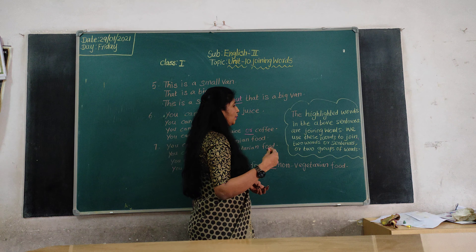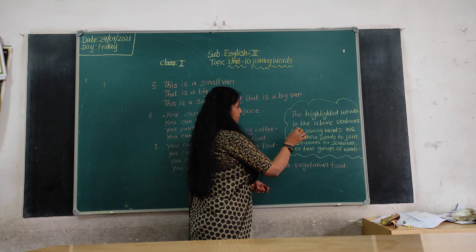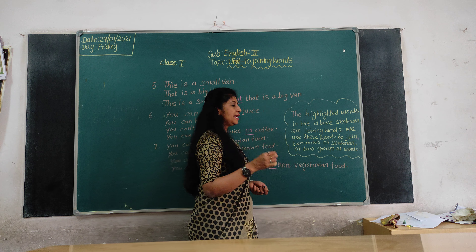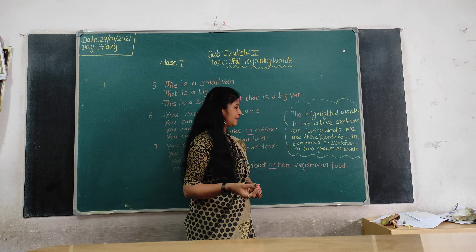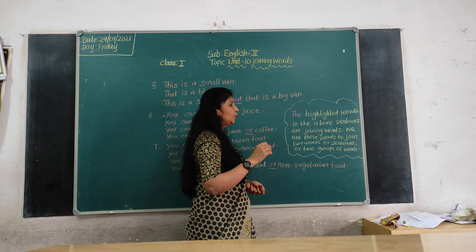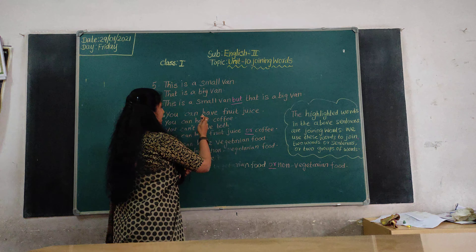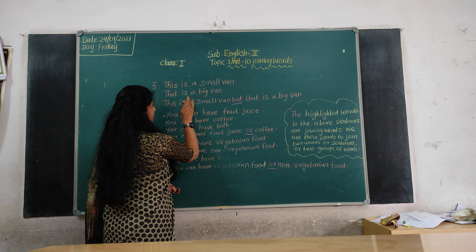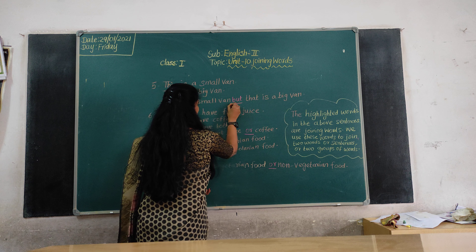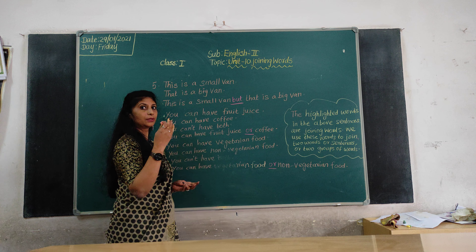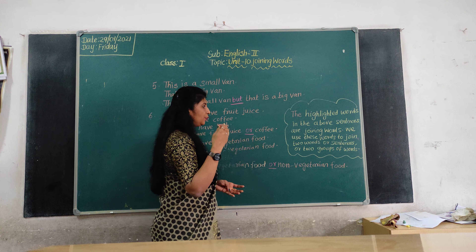Hi children. Welcome to First Time Read English, topic Unit 10: Joining Words. Look at these pictures and read the following connected sentences. Write down the sentences having and, but, or. These are connecting words.